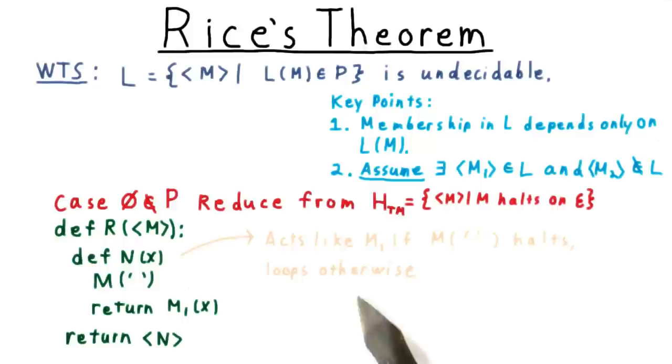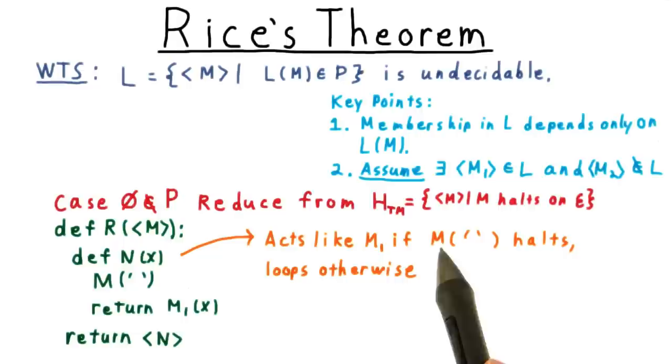Thus, N acts like M1 if M halts on the empty string, and it loops otherwise. This is exactly what we want. In the one case, the language of N is the language of M1, and hence N must be in the language.